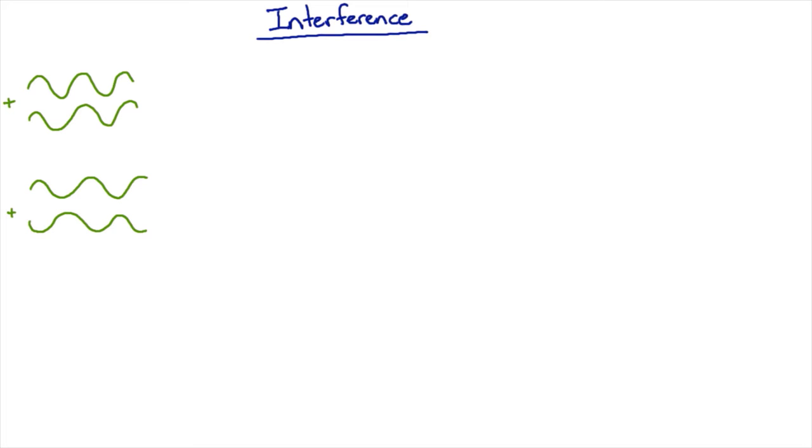Now if you have two sources of waves, for example like the two red bubbles in our water tank, and they're both giving out waves of the same frequency, then those waves are going to meet and depending on where they meet they're going to be either in phase or out of phase.